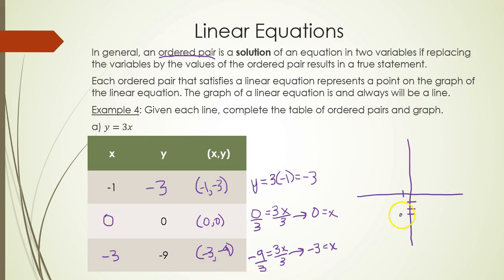So (-1, -3), (0, 0), and then (-3, -9). Notice all three points line up with each other.